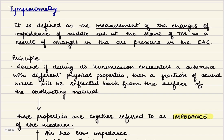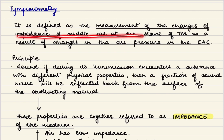I will be discussing tympanometry in this lecture; the other two will be discussed in a separate lecture. Tympanometry is defined as the measurement of the changes of impedance of the middle ear at the plane of the tympanic membrane.